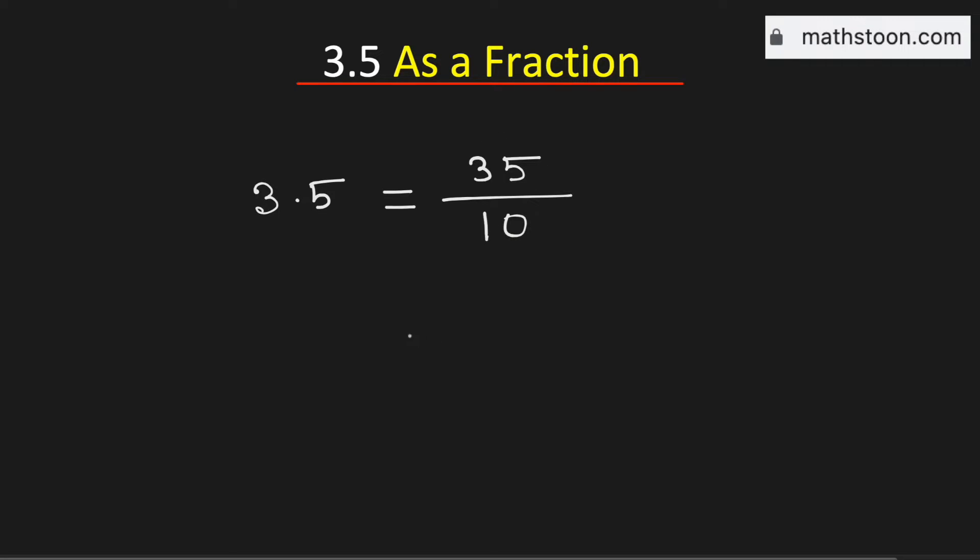Now we will simplify this fraction. See that both numbers are divisible by 5, so we can write both numbers as 5 times something. 35 can be written as 5 times 7 whereas 10 can be written as 5 times 2.